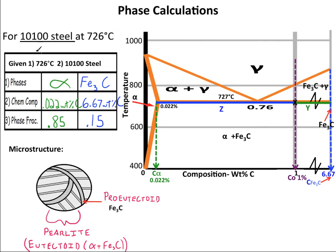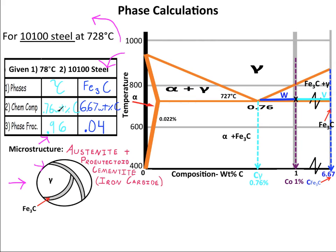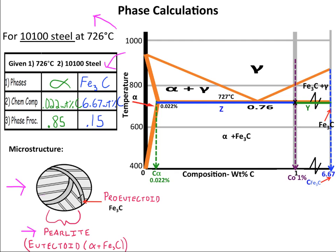For our last example, we're going to take that same 10-100 steel, but cool it down 2 degrees to 1 degree below the eutectoid temperature. Here is what the microstructure looks like. The pro-eutectoid iron carbide from the previous example is still there in the microstructure, and all of that gamma that was at the eutectoid composition has now formed into pearlite, as in the eutectoid example earlier. We call this microstructure pro-eutectoid iron carbide and pearlite — alternating platelets of eutectoid alpha plus iron carbide. The phase fractions reflect the area each phase takes up, and this 0.15 includes both the pro-eutectoid iron carbide and the eutectoid iron carbide.